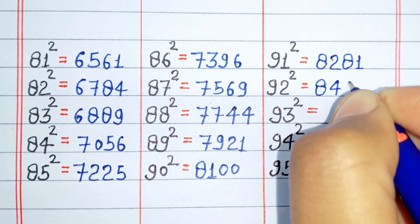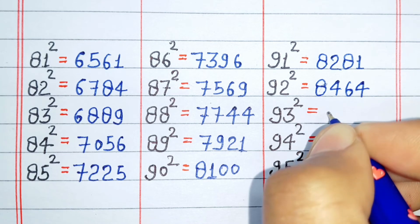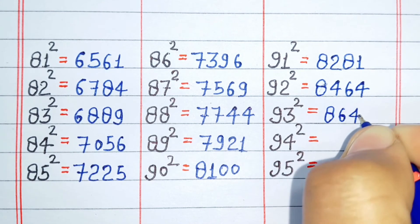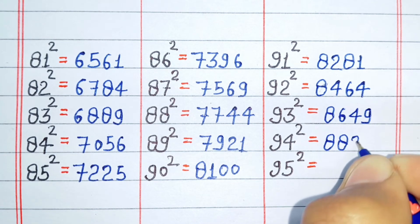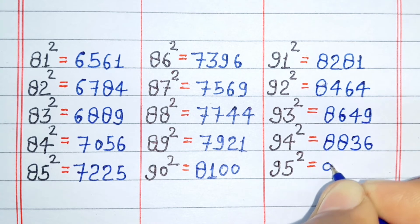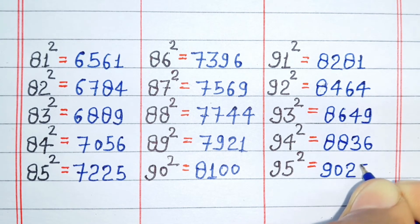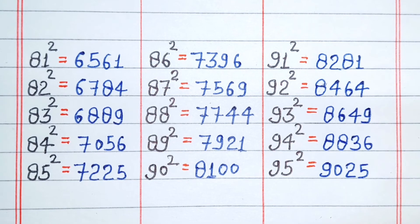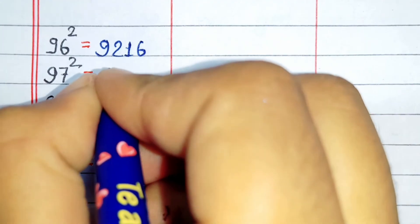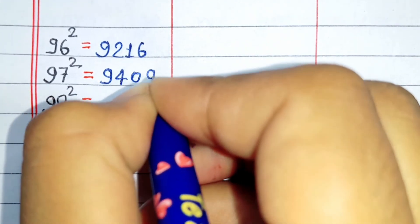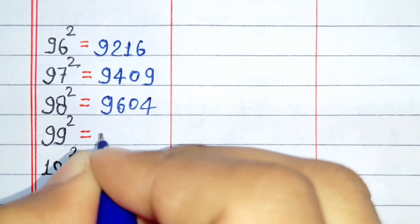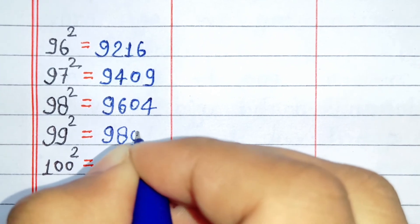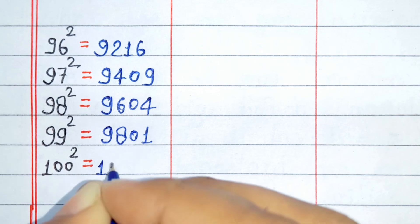Square of 92 is 8464. Square of 94 is 9821. Square of 95 is 9025. Square of 96 is 9216. Square of 97 is 9409. Square of 98 is 9604. Square of 99 is 9801.